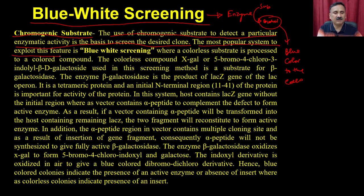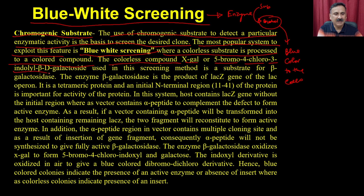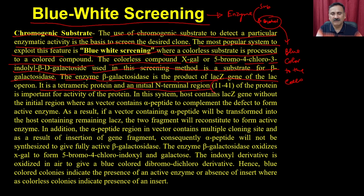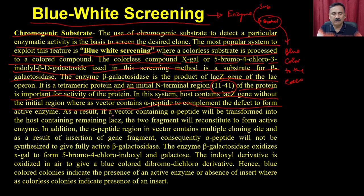The most popular system to exploit this feature is called blue-white screening, where a colorless substrate is processed to a colored compound. The colorless compound X-gal, also called 5-bromo-4-chloro-3-indolyl-beta-D-galactoside, is used as a substrate for the enzyme beta-galactosidase. Beta-galactosidase is the product of the lacZ gene of the lac operon. It is a tetrameric protein, and the initial N-terminal region (amino acids 11–241) is important for the activity of the protein. In this system the host contains the lacZ gene without the initial region, whereas the vector contains the alpha peptide to complement the defect to form the active enzyme.